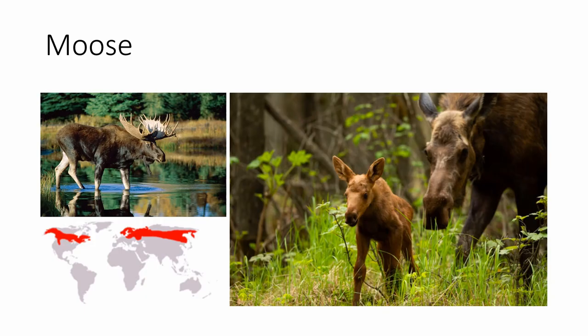Next we have moose, which is a big dark brown deer with moose antlers. Fun fact: these are called elk in Eurasia, which can be confusing, and North American elk are called red deer in Eurasia. Moose are mostly found in the boreal forests of northern North America, as well as a bit of the northern Rocky Mountains.